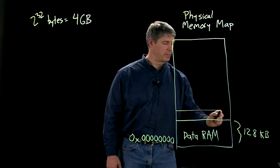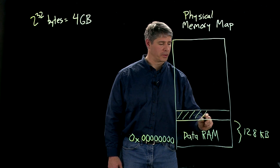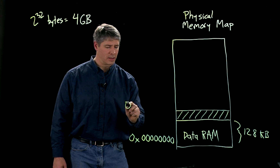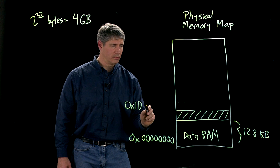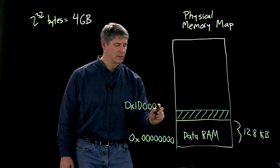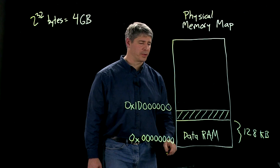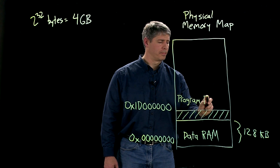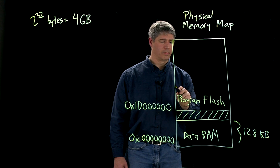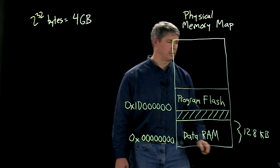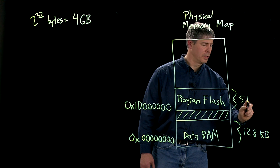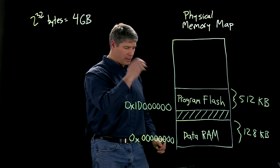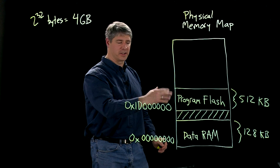Then there's a region of physical memory that corresponds to nothing. If we were to write that address to the bus, there would be nothing to access. Starting at memory location 0x1D000000, we have the program flash. For our PIC32, we have 512 kilobytes. Note that these two regions are not contiguous — there's a period of dead addresses that don't do anything.